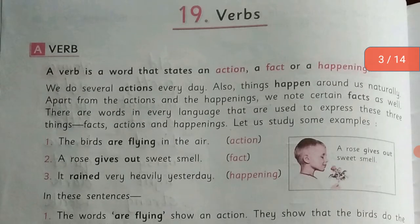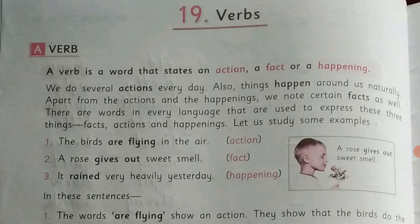So let's begin with our grammar lesson number 19 — verb. A verb is a word that states an action, a fact, or a happening. We do several actions every day. Also, things happen around us naturally. Apart from action and happening, we know certain facts as well. There are words in every language that are used to express these three things: facts, actions, and happenings.